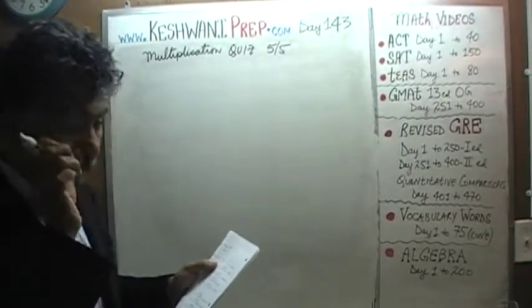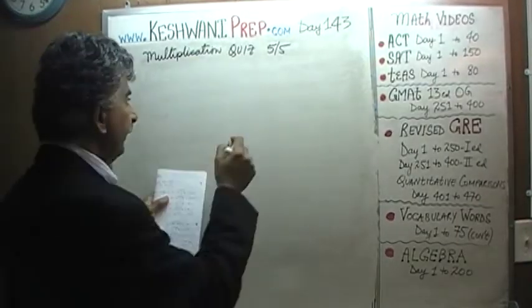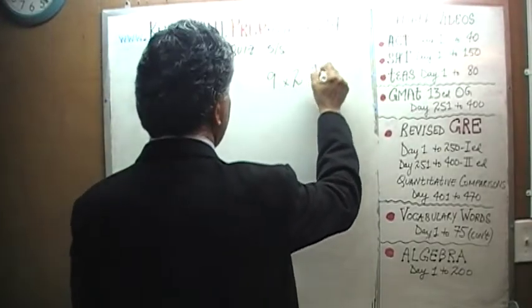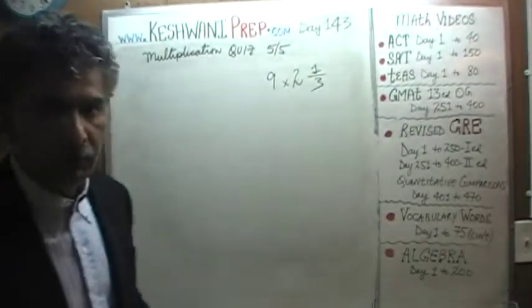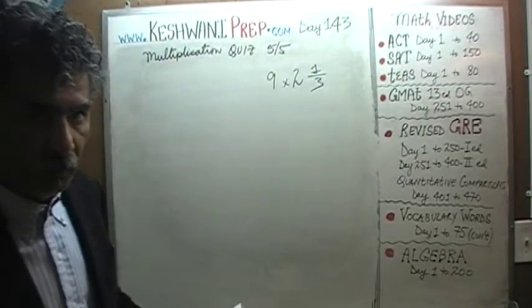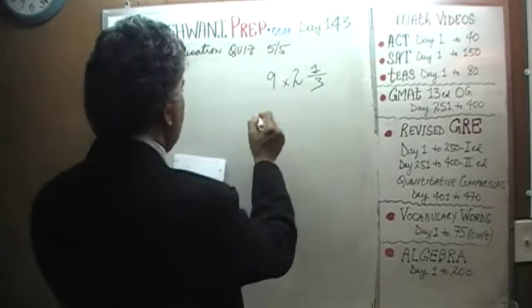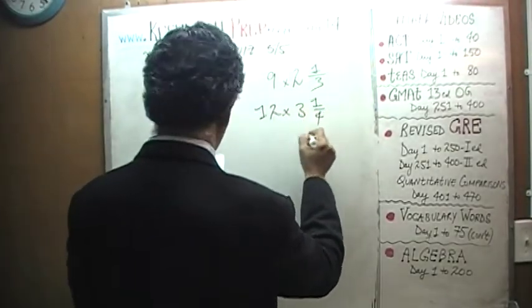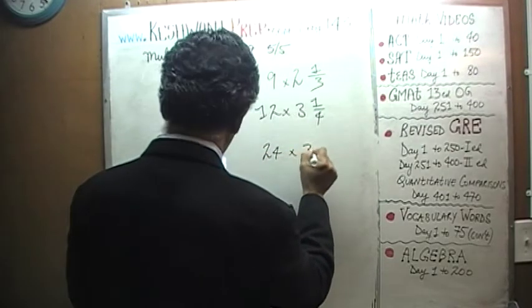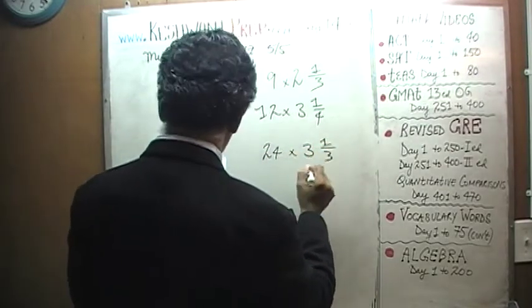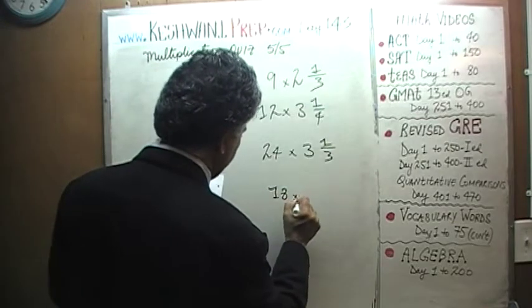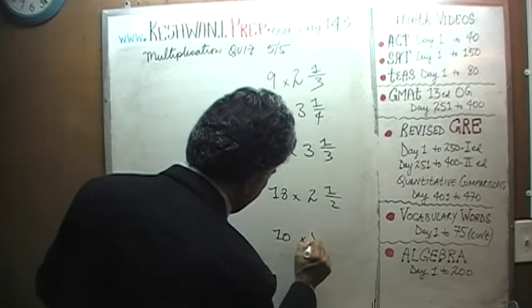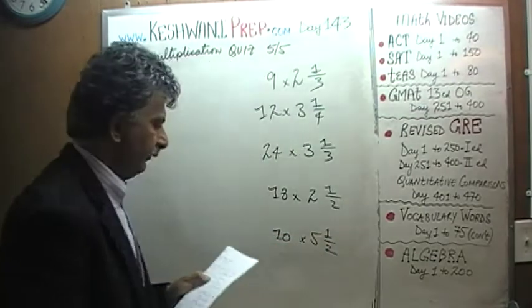You should start doing these problems as soon as I put them on the blackboard. Pause the video and do them yourself. The next five are: nine times two and one third, twelve times three and a quarter, twenty-four times three and a third, eighteen times two and a half, ten times five and a half. Do them yourself.